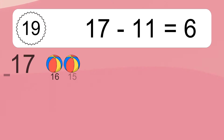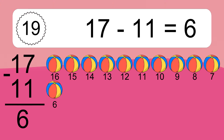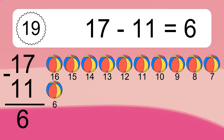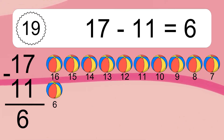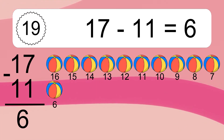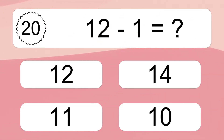17 minus 11 equals what? 17 minus 11 equals 6. Let's count it: 16, 15, 14, 13, 12, 11, 10, 9, 8, 7, 6. 12 minus 1 equals what?